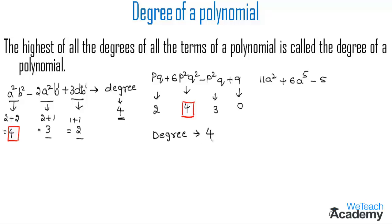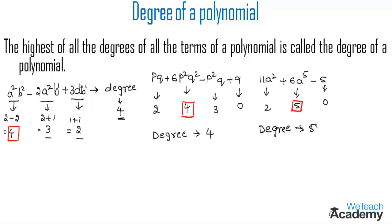Now let us find the degree of the second polynomial: 11a squared plus 6a to the power 5 minus 5. The degree of the first term is 2, the degree of the second term is 5, and the degree of the constant term is 0. The greatest number is 5, so the degree of this polynomial is 5.